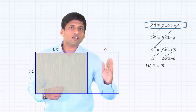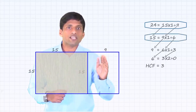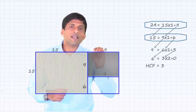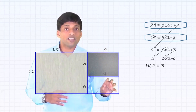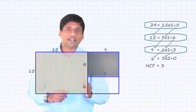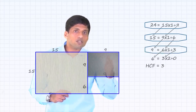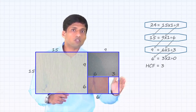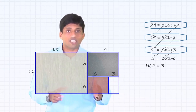From the remaining rectangle, which is a 15 by 9 rectangle, the maximum square I can take out is a 9 by 9 square, by having a cut here. But I'm still left with some area where I cannot take a 9 by 9 square — there is still a remainder, area is left out. Now we are left with a 9 by 6 rectangle. From this, the biggest square which can be taken out is a 6 by 6 square, but still area is left out — you cannot take another 6 by 6 square.